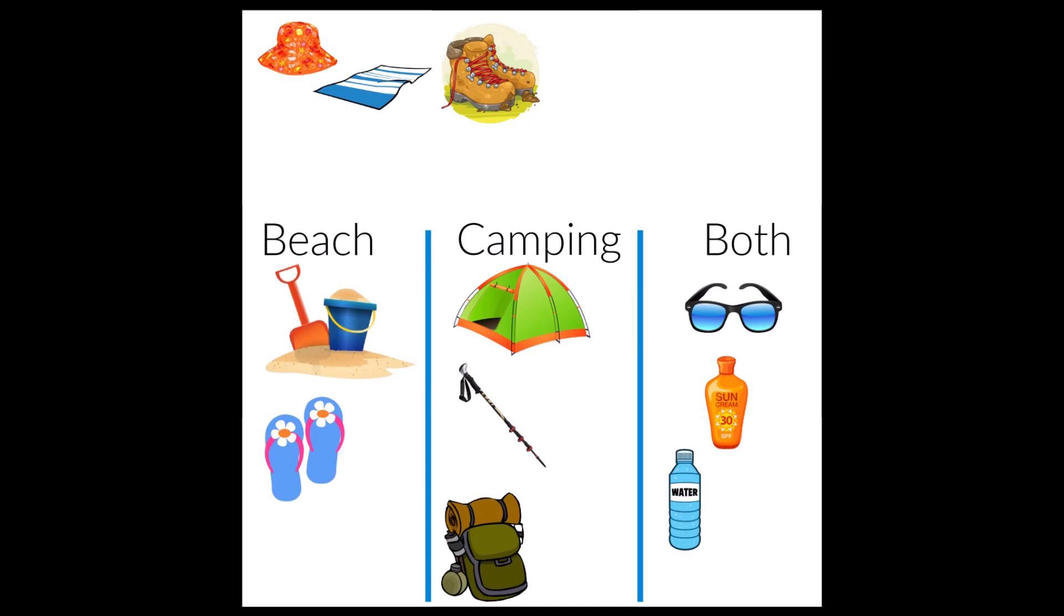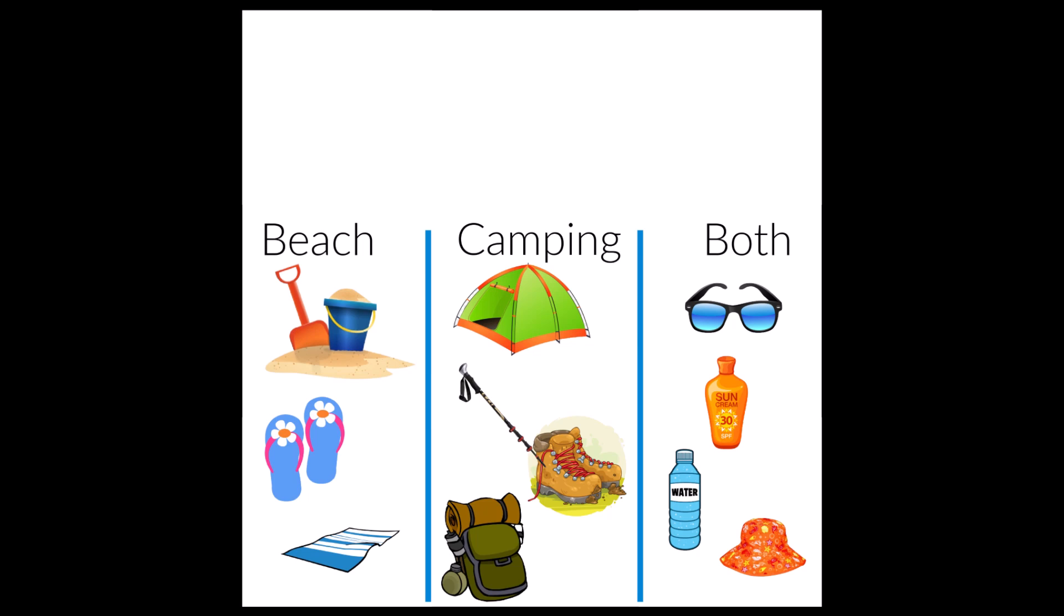Next, we have some boots. Now, those look like some heavy boots. We wouldn't want to wear those to the beach, would we? No, our feet would get hot and sweaty. Those are for camping. All right, guys. We have two more left. What about this towel? We use towels to lay out when we go to the beach, don't we? Or to dry off after getting in the water. So let's move the towel to the beach category. Now we have one more item left, and that's a hat. It can protect us from the sun and keep us cool. Well, we'll definitely need it at the beach. But if we're hiking, we'd want it too, don't you think? So let's put this cute orange hat under the both category.